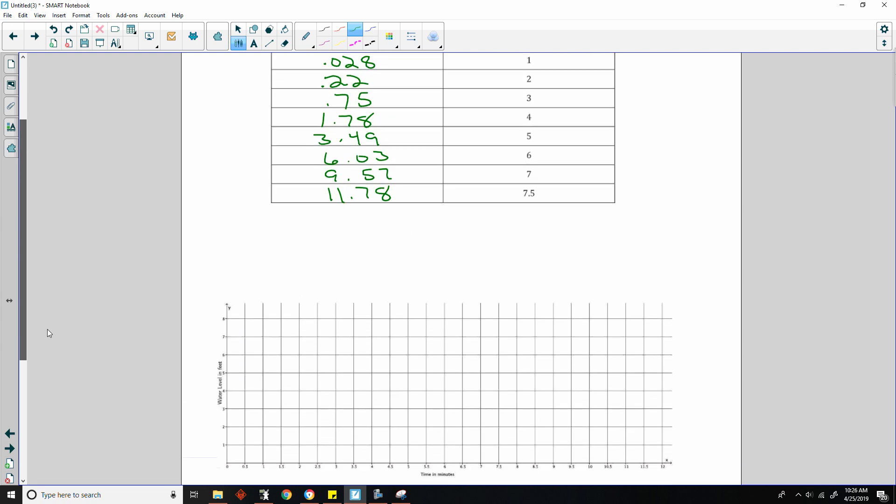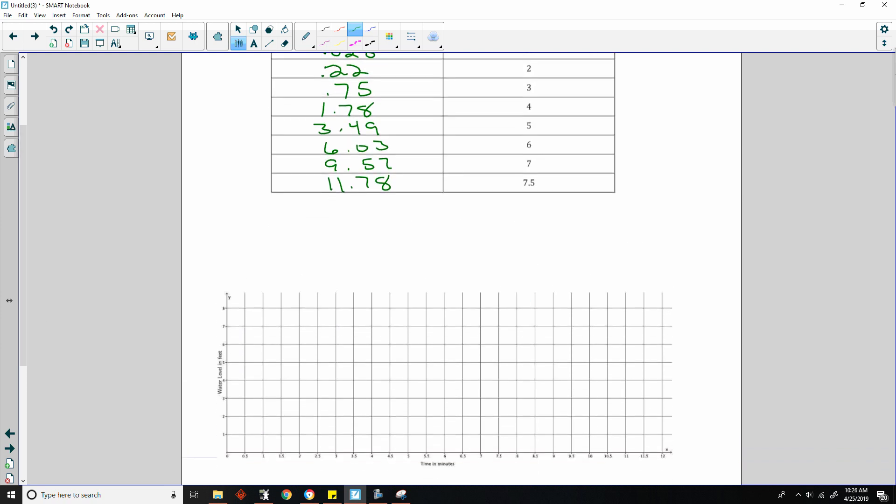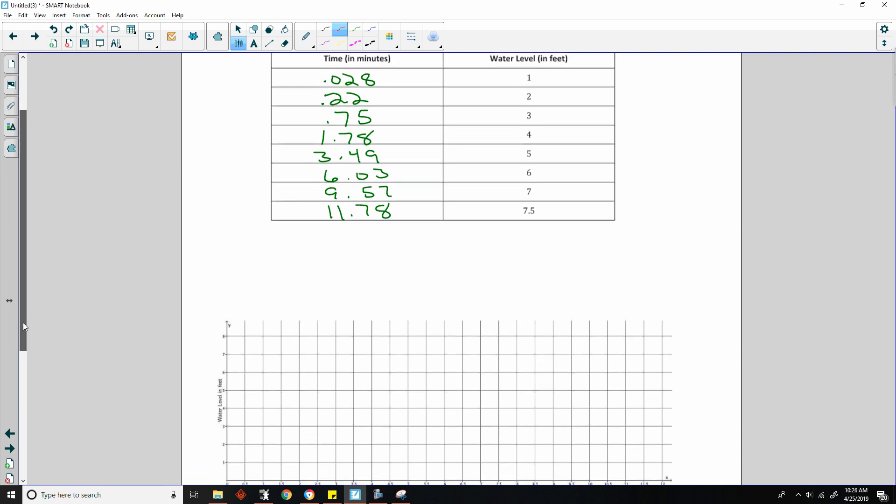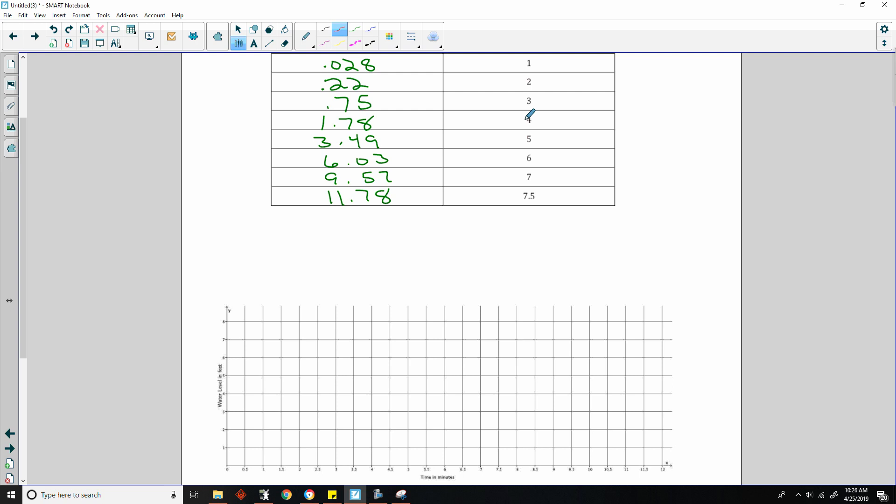So now we want to graph these. I'll use red to graph it. It's easier to see. So here we have a table. Time in minutes, and it's in half second intervals. And then water level in feet. So I want to enter this data. Time in minutes. Water level in feet. So when time in minutes was .28, which is a little bit more than halfway here, we were at 1. So I put a dot right here. Oh, that's .028. We'll be careful. .028 would be way over close to the edge like that.